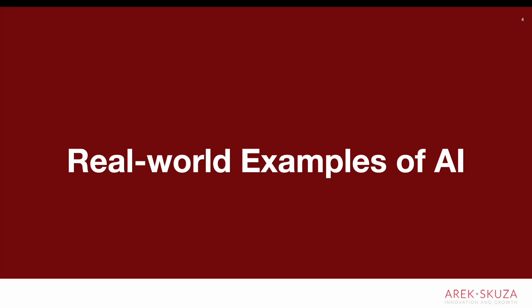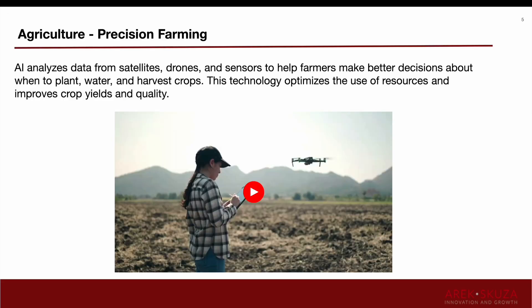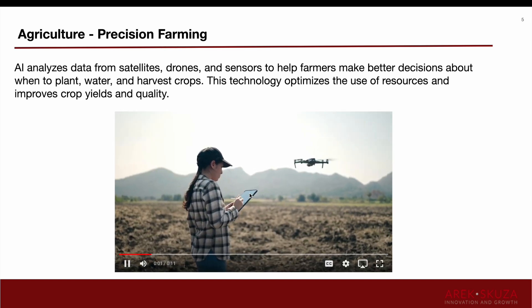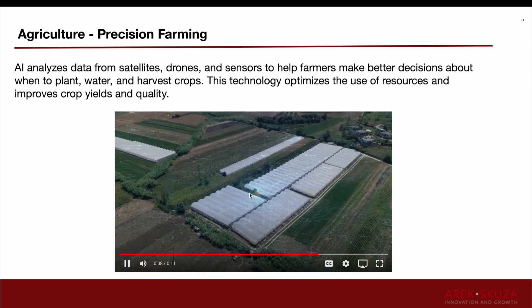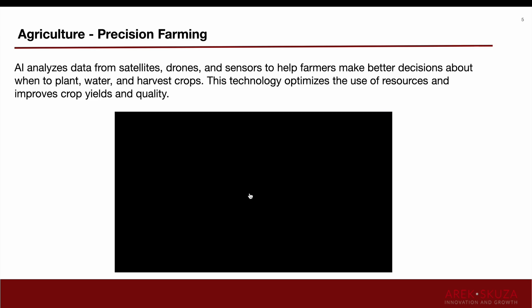Let's look at a couple of real-world examples of AI. First, agriculture precision farming. This is the example of a drone flying over the earth's surface, scanning it to help farmers make better decisions about when to plant, water, and harvest crops. This technology optimizes the use of resources and improves crop yields and quality. For instance, that drone can be equipped with image recognition technology — hence machine learning — to look for unstructured elements of the earth's surface, like holes or stones that would be difficult when a tractor shows up on the field.